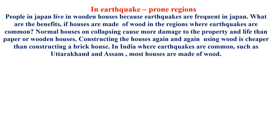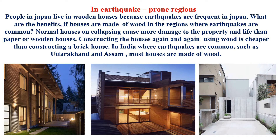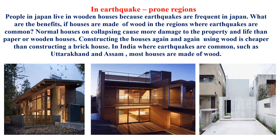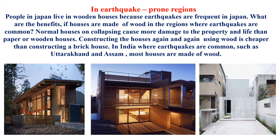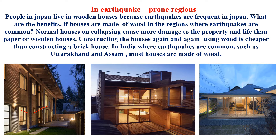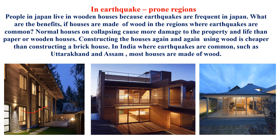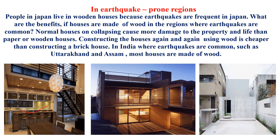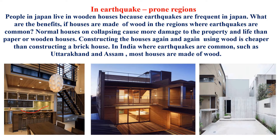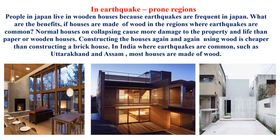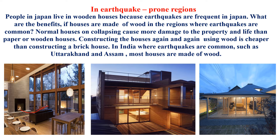Coming to regions where there is effect of earthquakes. Especially in Japan, there are more earthquakes. People in Japan live in wooden houses because earthquakes are frequent there. If houses are made of wood in earthquake-prone regions, the collapse causes less damage to property and life than brick houses. Constructing wooden houses again is cheaper than constructing a brick house. In India, earthquake-prone areas like Uttarakhand and Assam, most houses are made of wood.